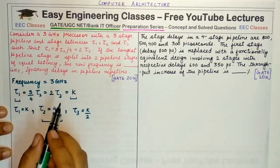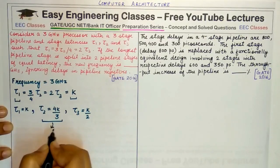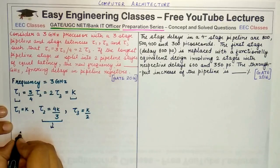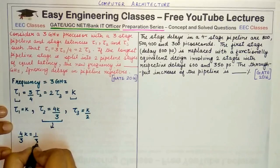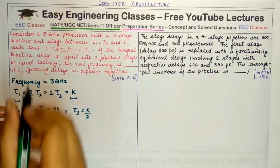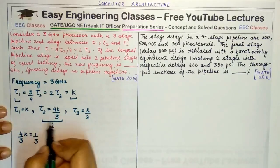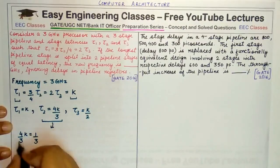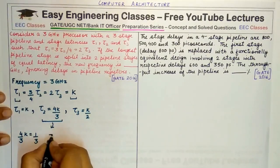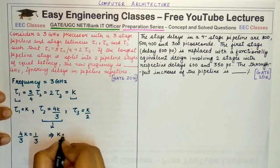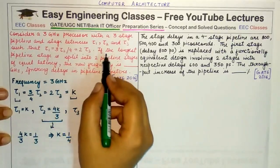Because 3 was the frequency and τ2, this maximum value out of the three, is the latency. I have inverted the value of frequency, and now from this equation I get the value of K as 1/4. This was the first part of the question.